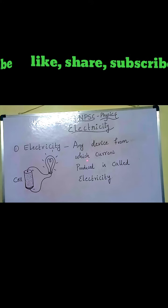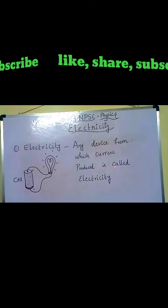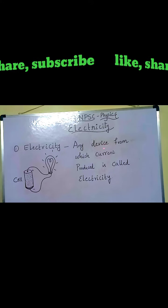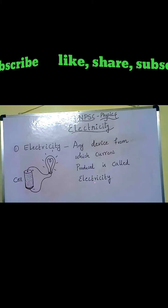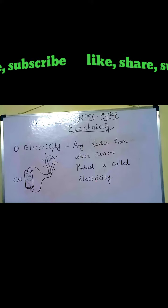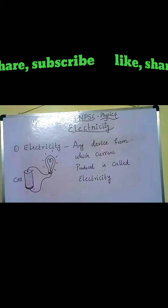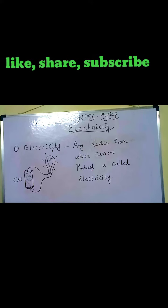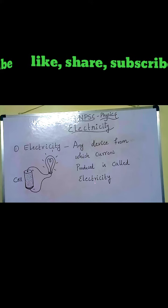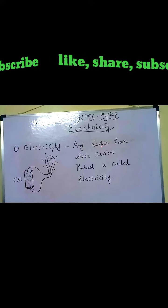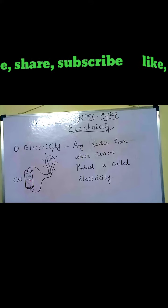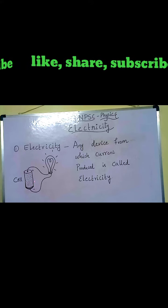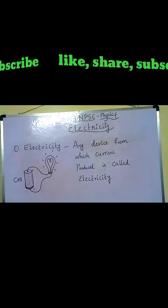Any device from which current is produced is called electricity. Let's talk about a cell. The cell has a positive terminal and a negative terminal.